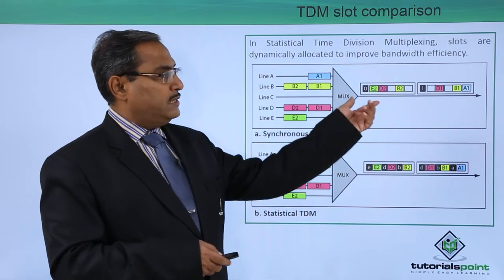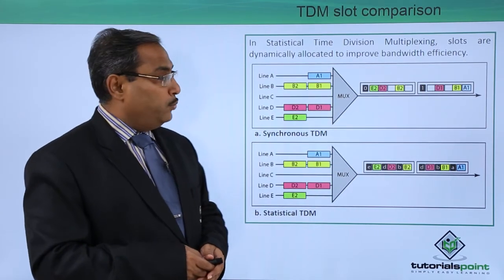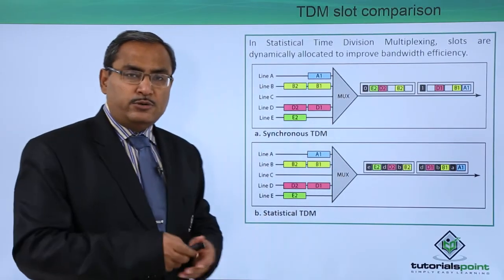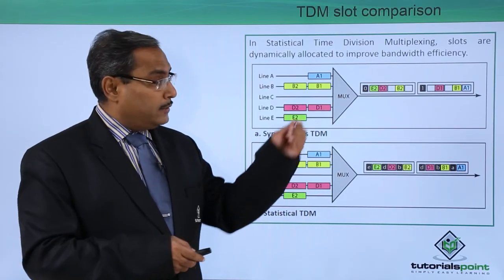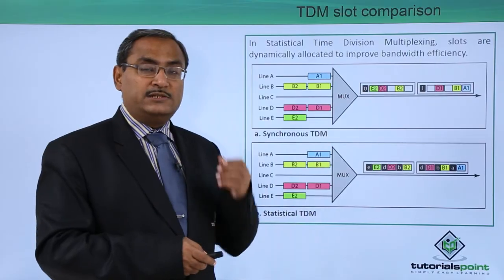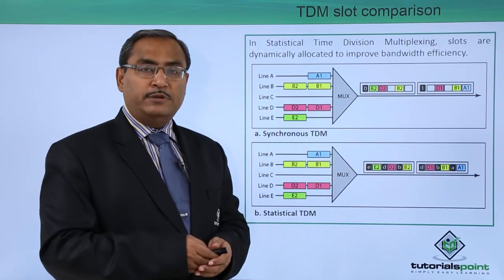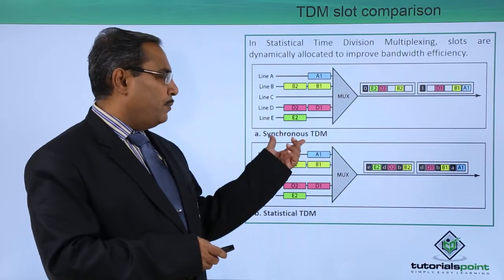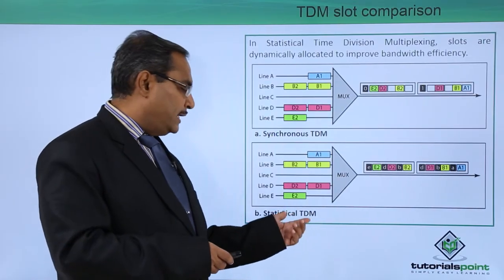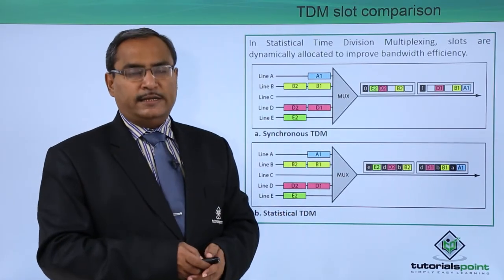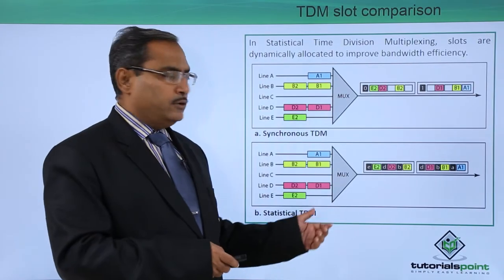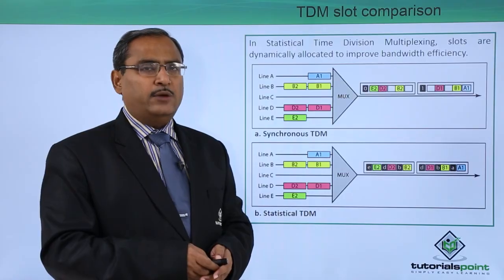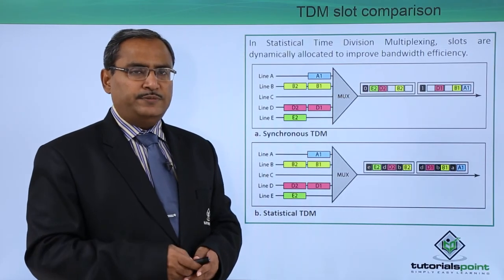In synchronous time division multiplexing, we know the fixed order A, B, C, D, E, so there is no need for a header. But when a respective line is not transmitting, you are wasting time by giving it a time slice that is not being utilized — that was the problem with synchronous TDM. This has been resolved in statistical TDM. In this video we discussed how statistical TDM works. Thanks for watching.